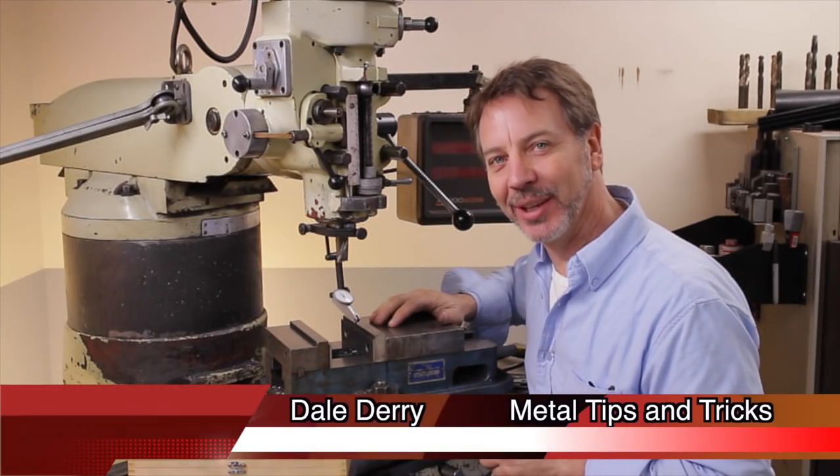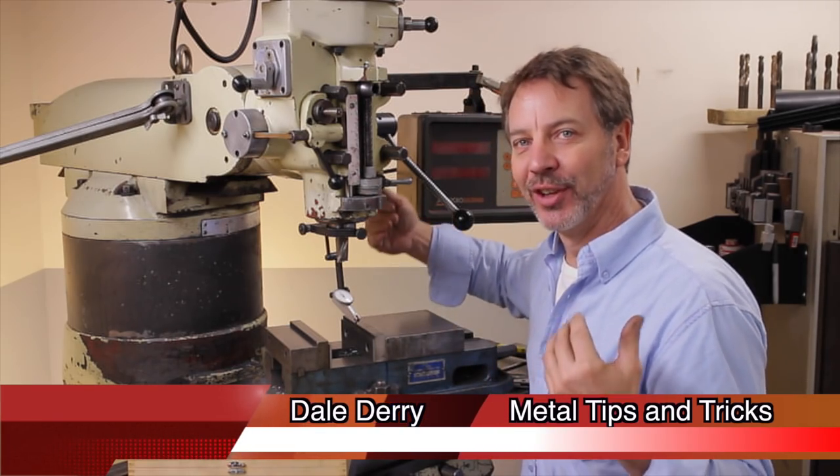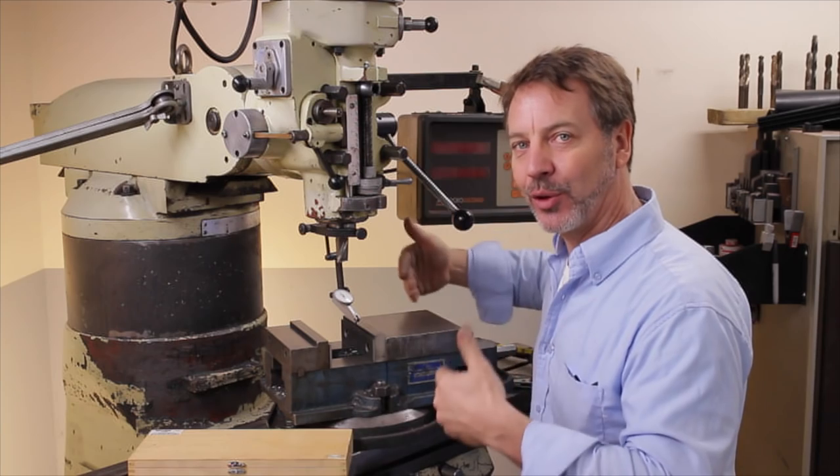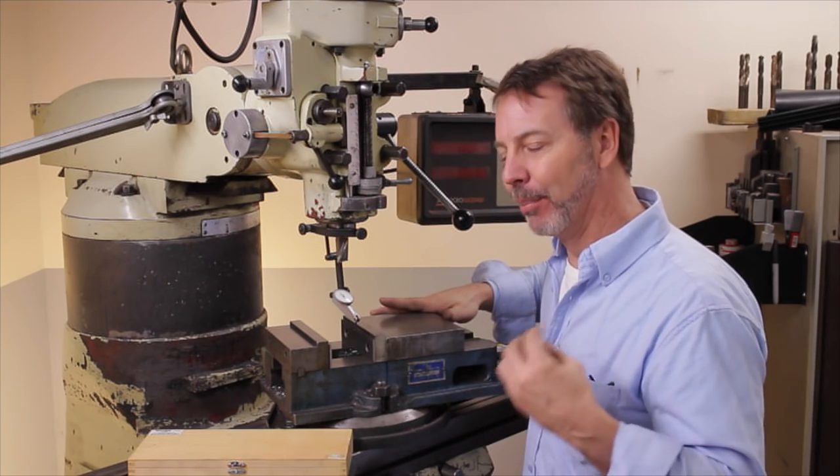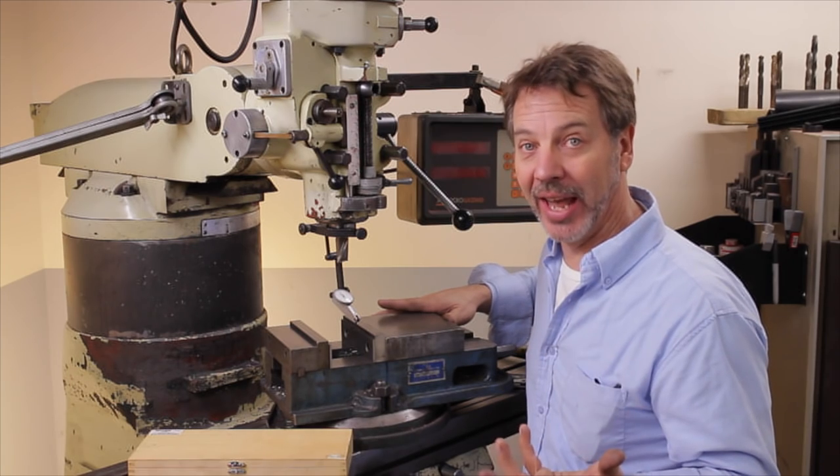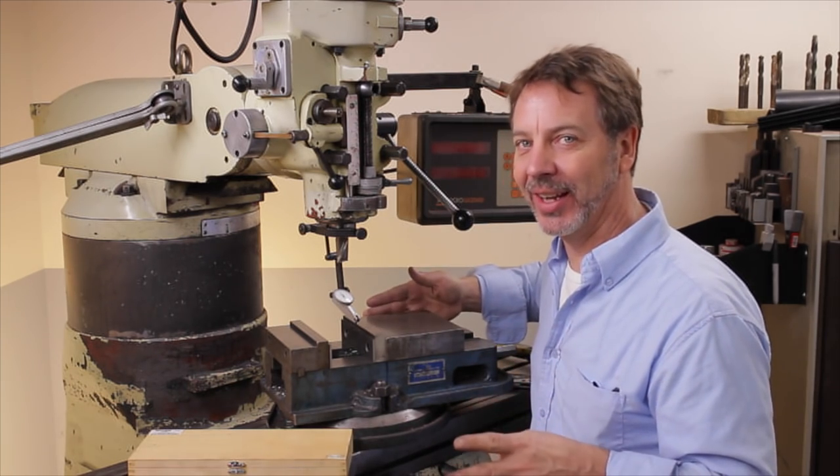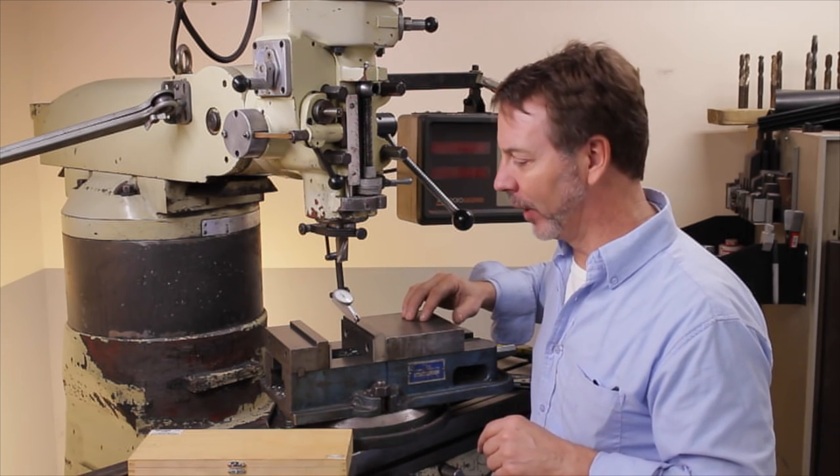Hey guys, welcome back to Metal Tips and Tricks. Last week I showed you how to align your vise so it is in tram and square to the rest of your machine. But what if you have to align it at a certain angle? Well, that's what I want to show you today. It's a very similar technique but with a couple extra little changes to it.